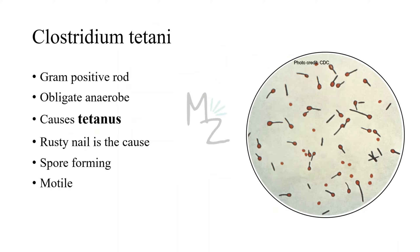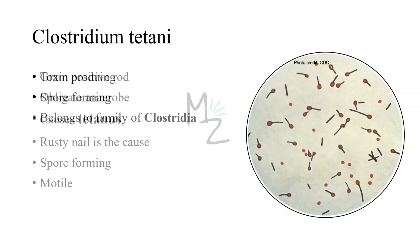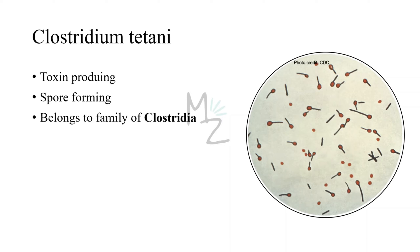Clostridium tetani is a gram positive rod and an obligate anaerobe, meaning it cannot survive in the presence of oxygen — oxygen is toxic to it. It is responsible for causing the disease tetanus, with its famous symptom the locked jaw. This bacterium forms spores in unfavorable conditions, is motile, and produces toxins including tetanospasmin, tetanolysin, and belongs to the family Clostridia.